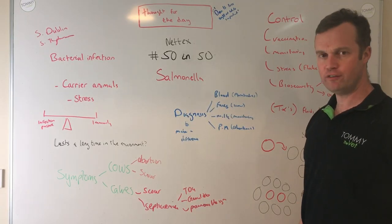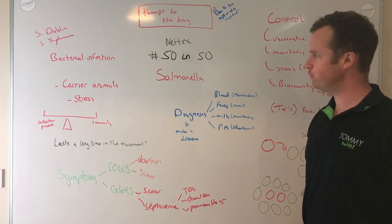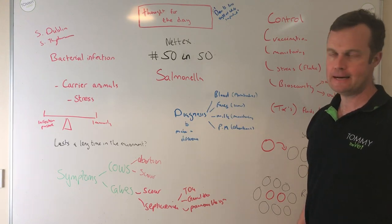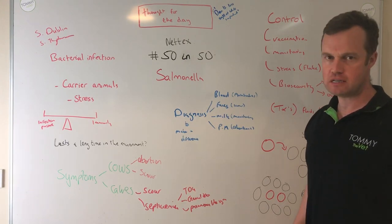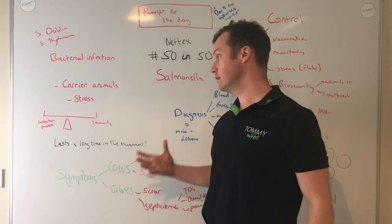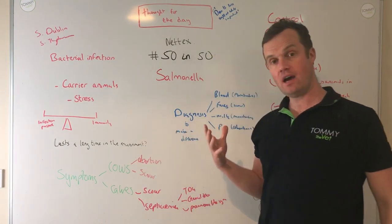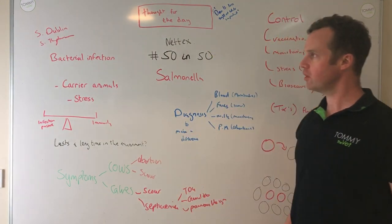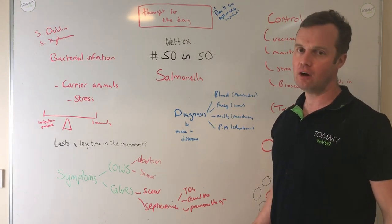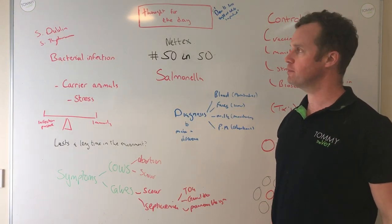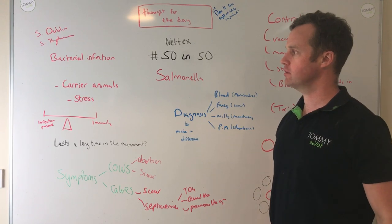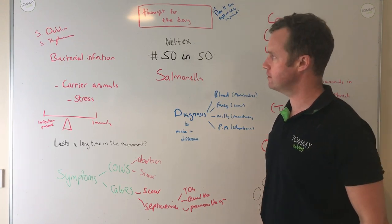Today I'm going to cover 50 vlogs and 50 blogs in 50 days. Today's topic is Salmonella, an infectious disease caused by bacteria that causes a certain amount of issues in animals, humans, and across all our species. In cattle, it doesn't cause abortion in sheep, but typically we see it in cattle herds, and I'm going to talk a little bit about that today.